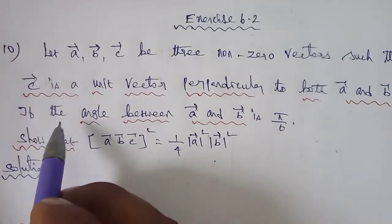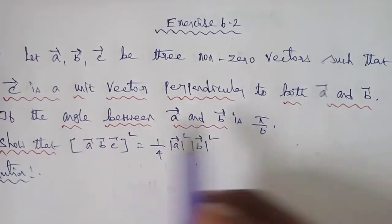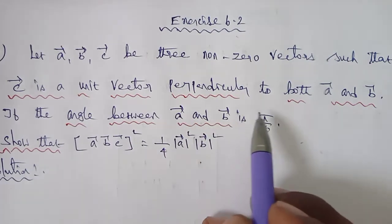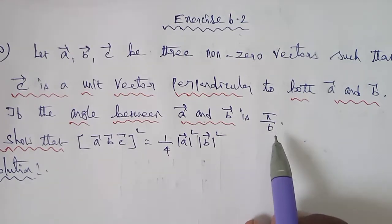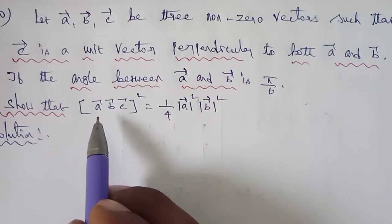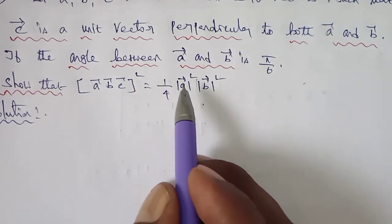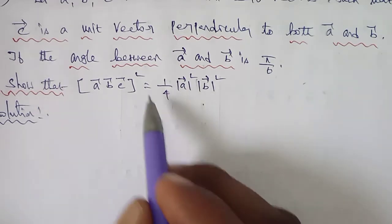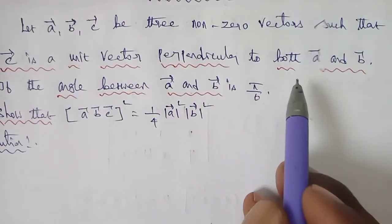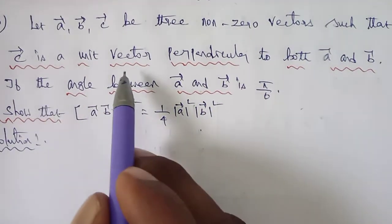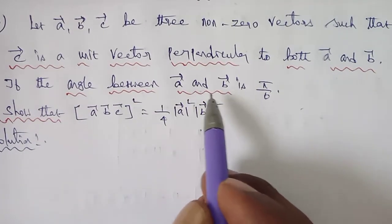Exercise 6.2, Question 10: Let a vector, b vector, c vector be three non-zero vectors such that c vector is a unit vector perpendicular to both a vector and b vector. The angle between a vector and b vector is π/6.